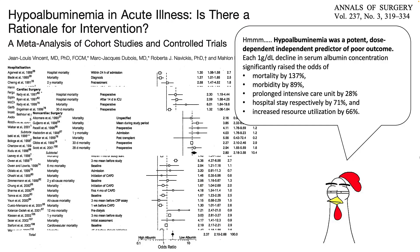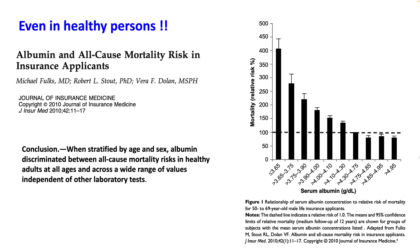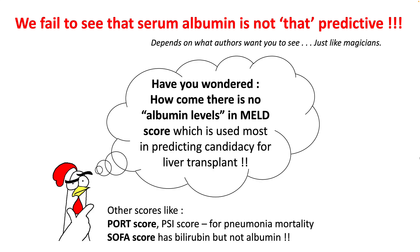So what about that correlation showing higher mortality with hypoalbuminemia in both sick and non-sick patients? One thing to consider is that there are many models which have not found this to be an accurate predictor. For example, the MELD model — commonly used in predicting candidacy for liver transplant — does not include albumin level. Other scoring systems like SOFA and PORT also do not include albumin in their calculations.